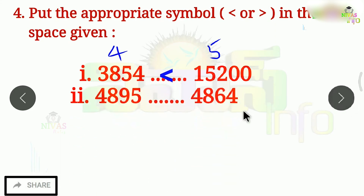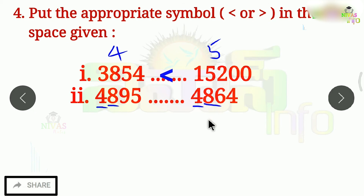The second problem has two 4-digit numbers. Since both are 4-digit numbers, we compare digit by digit. In the first place, there is 4 and 4 — equal. The second digit: here is 8 and there is 8 — equal. The third digit: here is 3 and there is 9. This number is big and this number is small. So the starting number is big — we use the greater than symbol.